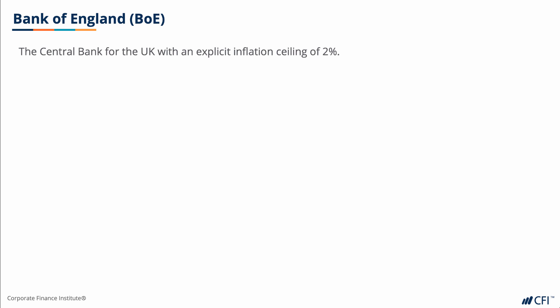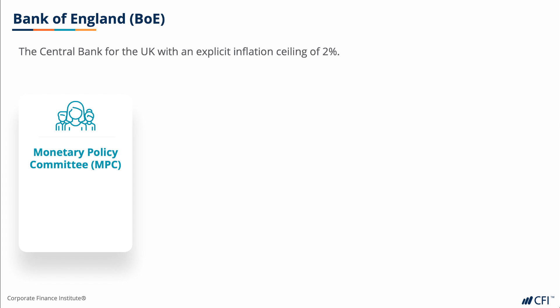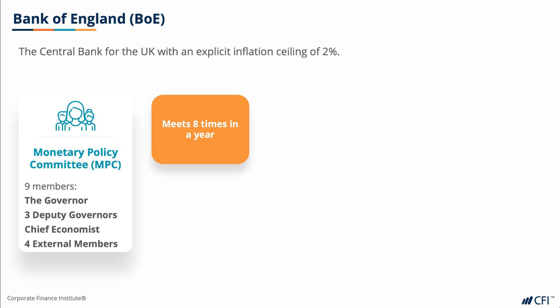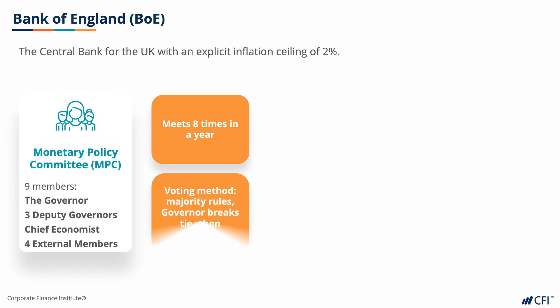Within the Bank of England, the Monetary Policy Committee — the MPC — decides what monetary policy action to take. They meet roughly every six weeks, which equals eight times a year. The MPC is made up of nine members: the Governor, three Deputy Governors, the Chief Economist, and four external members appointed directly by the Chancellor. The decision is based on the MPC majority, with the Governor holding the deciding vote in case of a tie.